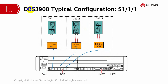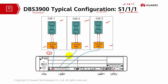This is an example of the DBS 3900 series typical sector configuration. Each sector has one cell — three sectors with three cells. They use the same band in three different RRUs at 1.8 GHz, connected to an LBBP. This uses a star topology — one port connected to one RRU for each of the three sectors, resulting in a one-to-one-to-one connection mode.